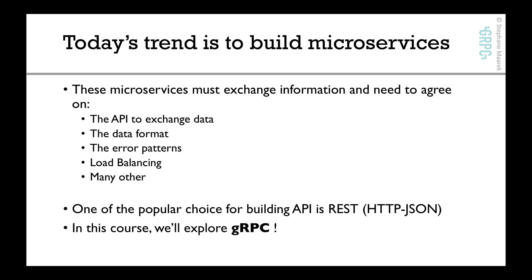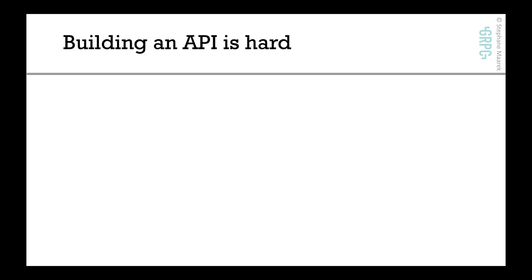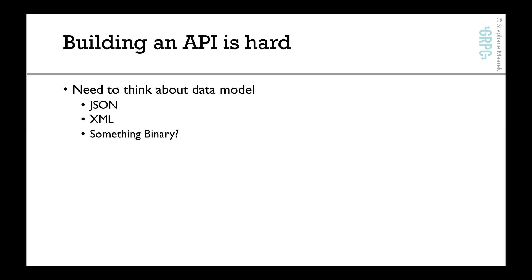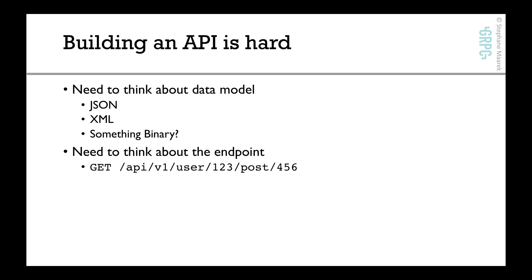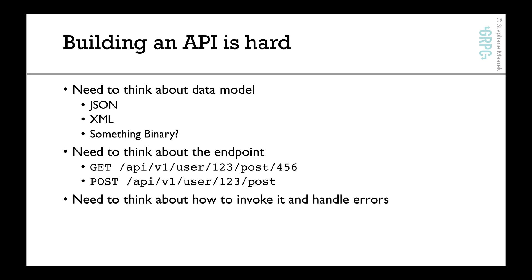In this course though, we won't cover REST — we'll explore gRPC, and there's a whole section on why gRPC versus REST. Building an API is really hard and you've probably experienced this — it's not fun. You need to think about the data model: do I want JSON, XML, or something binary? You also need to think about the endpoints. For example, a REST API endpoint looks like: GET /api/v1/user123/post456. That's quite complicated. You also need to think about how to invoke it and how to handle errors. It's really, really tough.